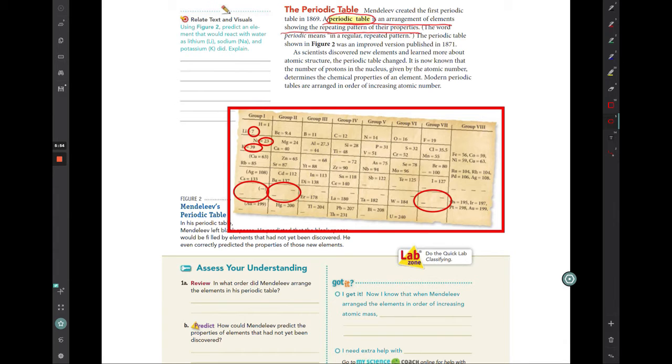And he was saying that if we have an element that has certain properties and we find another element that has certain properties that are a little bit higher numbers, there has to be something that's in the middle. There has to be something between those two. So he actually predicted some of these elements existence before they were ever found. He actually said that we must expect the discovery of many yet unknown elements. For example, elements that are similar to aluminum and silicon, whose atomic weight would have to be between 65 and 75.